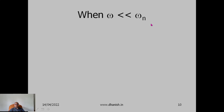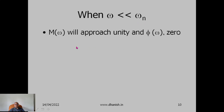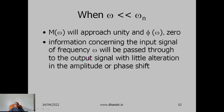When the signal frequency is very small compared to the natural frequency, the magnitude ratio will be close to 1 and the phase lag close to 0. This means the information concerning the input signal of frequency ω will be passed through to the output signal with little alteration in amplitude or phase shift — not much change compared to a signal of 0 frequency. This region of frequency is called the transmission bandwidth, where the signal is transmitted without any distortion.